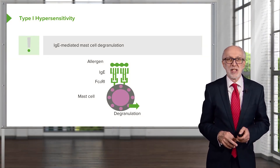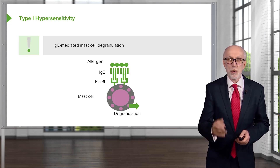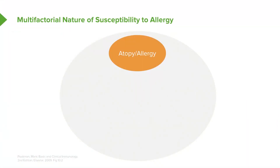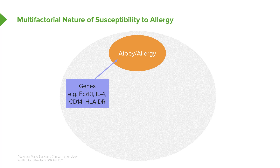Type 1 hypersensitivity — IgE-mediated mast cell degranulation — is what we usually think of as allergy, often referred to as atopy, an inappropriate production of IgE antibodies caused by a multitude of different factors. Genetics is important, but other factors also matter. There is not a single dominant allergy gene; rather, several genes contribute to the development of the allergic process. Amongst them are the gene encoding FC epsilon R1, the gene encoding interleukin-4, CD14, and HLA-DR.